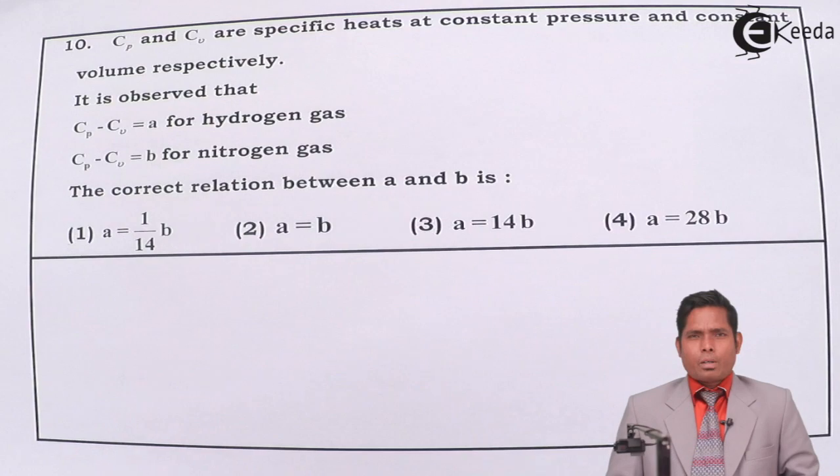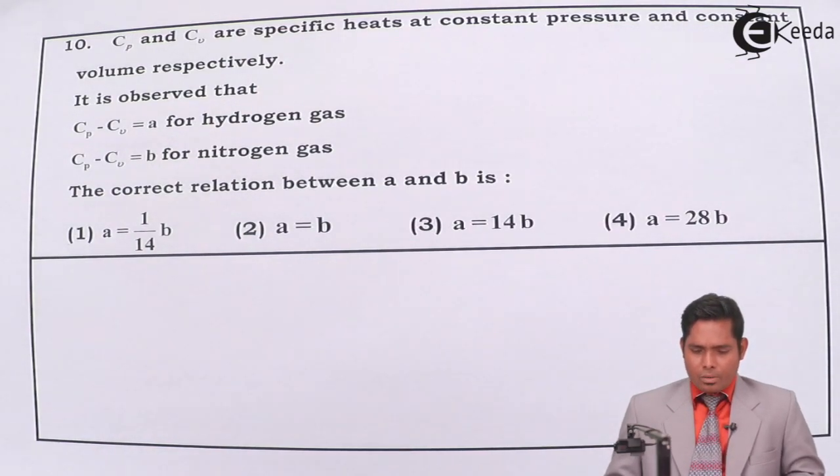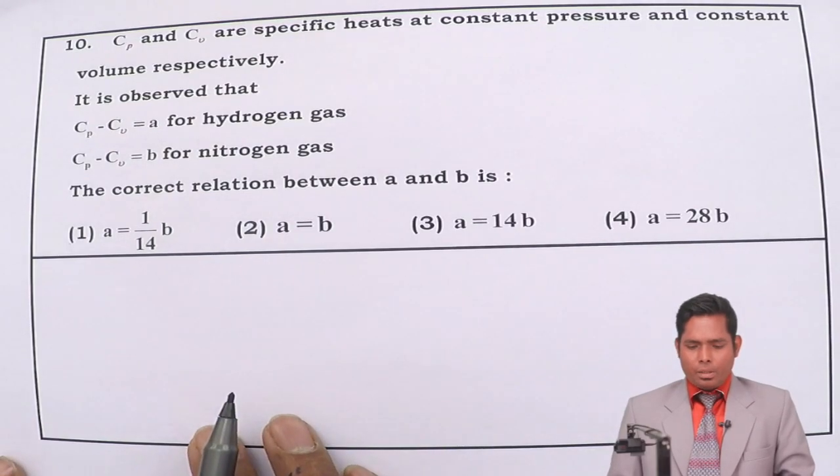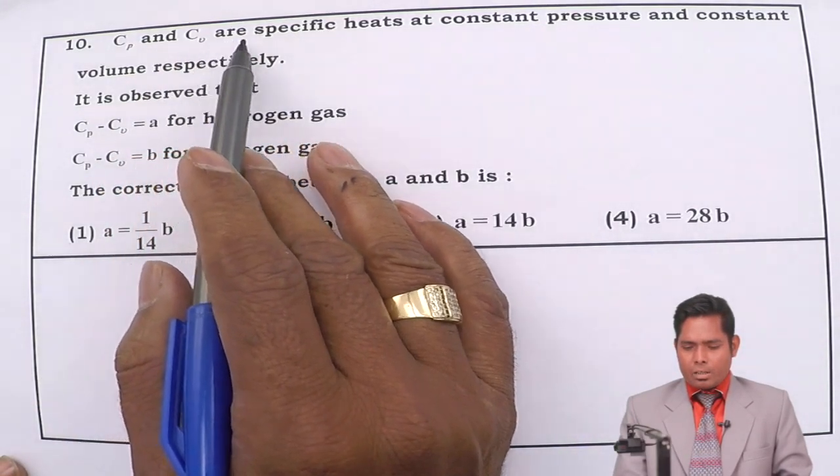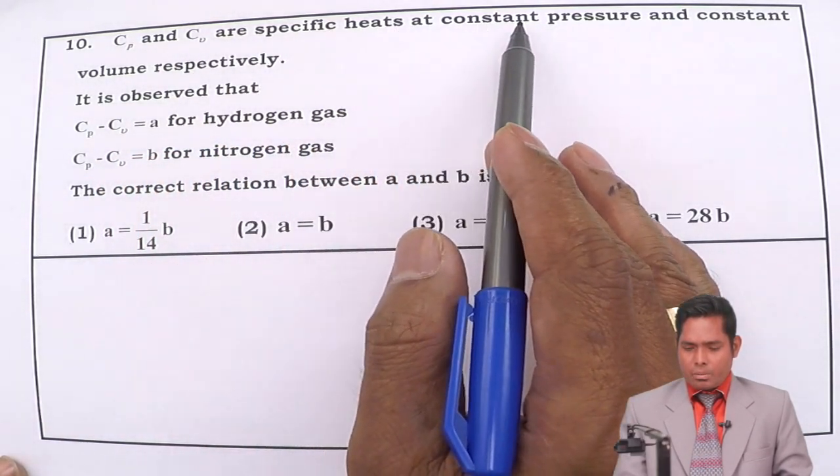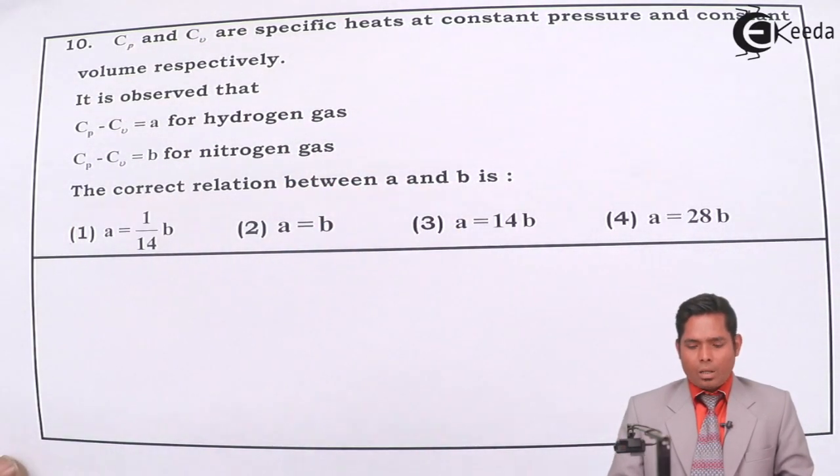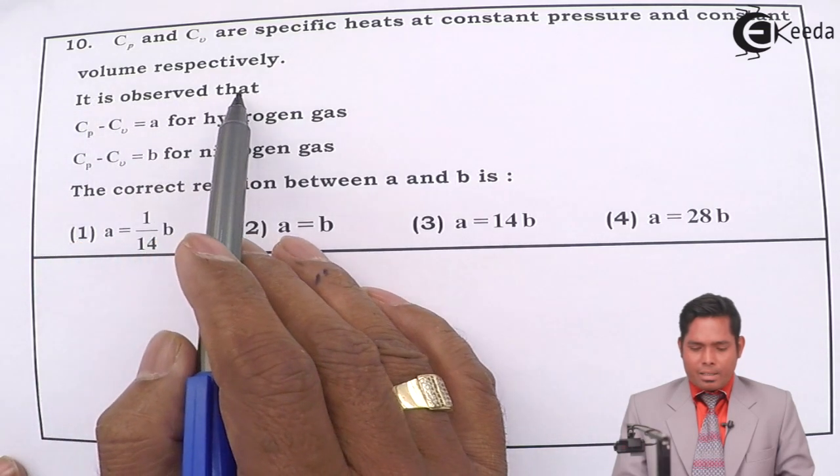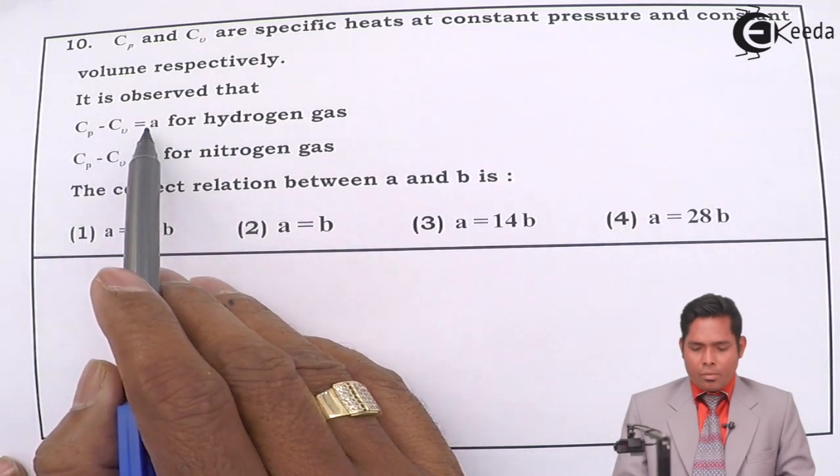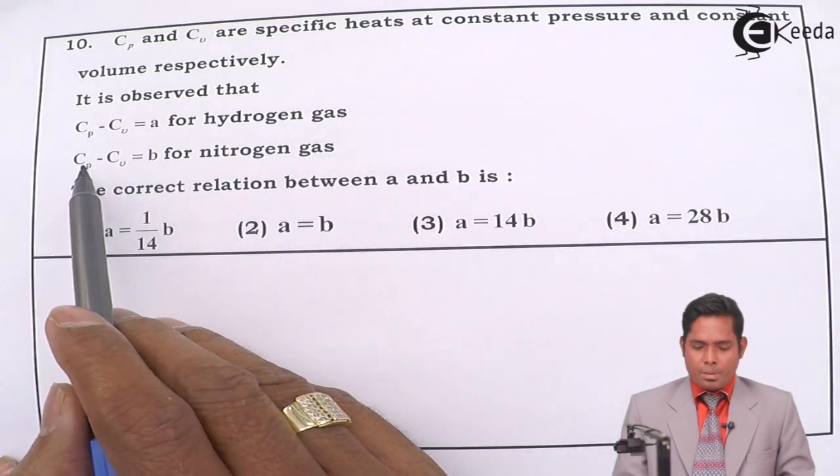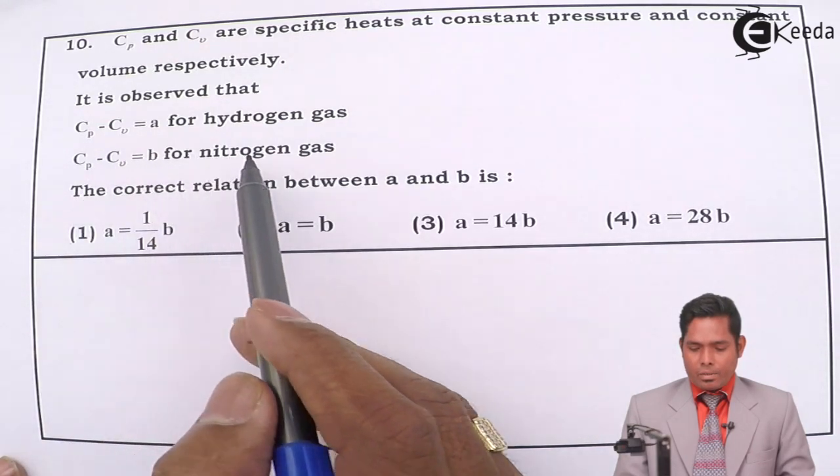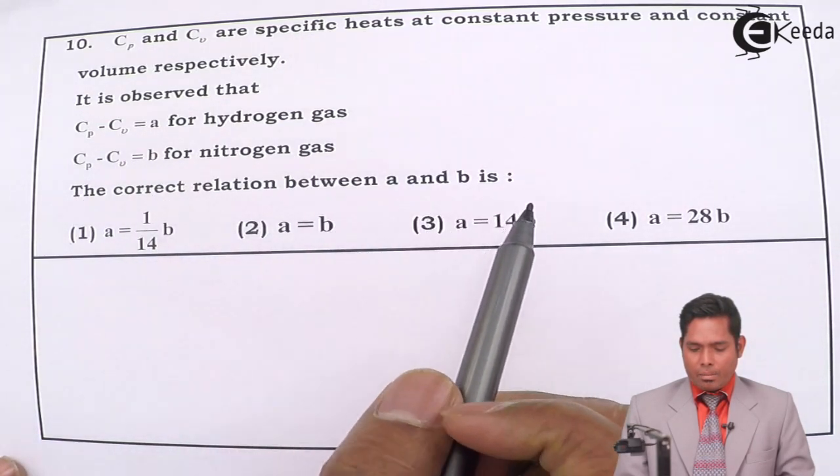Hello students, let us take one more question, question number 10 of the JEE main paper. Cp and Cv are specific heats at constant pressure and constant volume respectively. It is observed that Cp minus Cv is A for hydrogen gas, Cp minus Cv is B for nitrogen gas. The correct relation between A and B is.